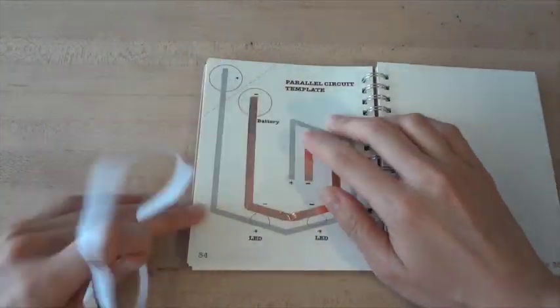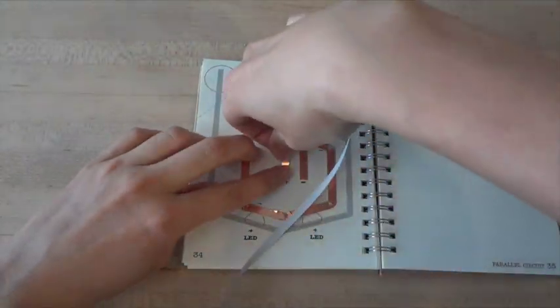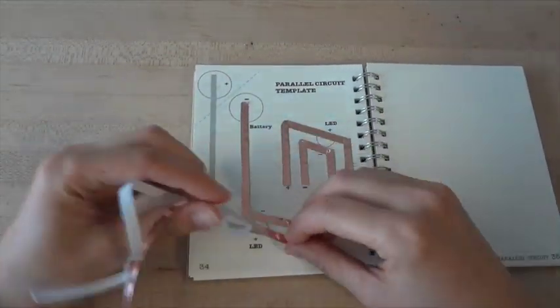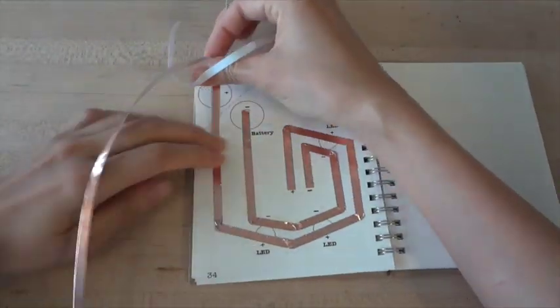The inner foil connects to the negative of your battery, and the outer foil connects to the positive side of your battery, and you can put your LEDs anywhere along this foil track to turn them on.